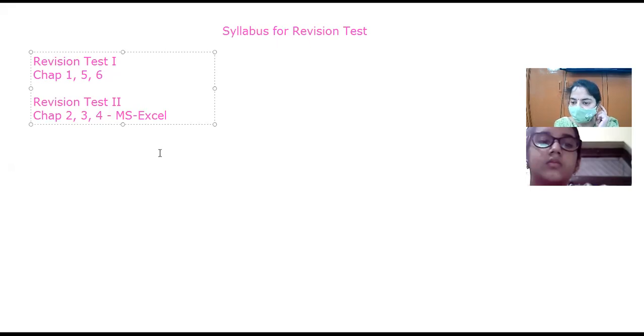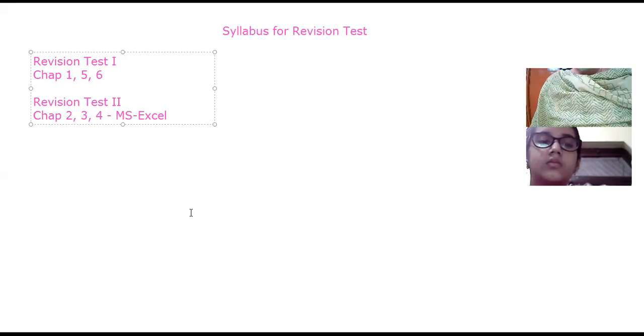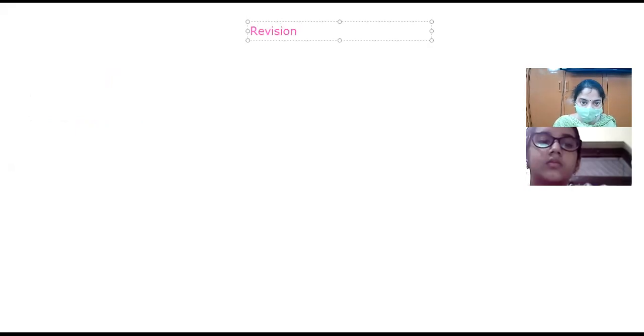Okay, let's see — the syllabus for the revision test is clear. We will start the revision with chapter number one. Which chapter do you want to start with for revisions? Okay, we will start with the first — the revision of chapter number one. Write down the extra questions.